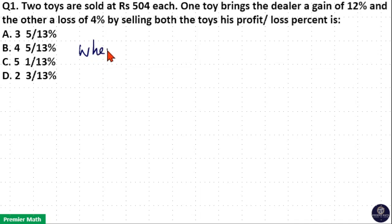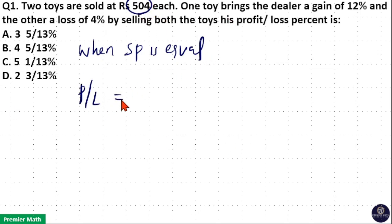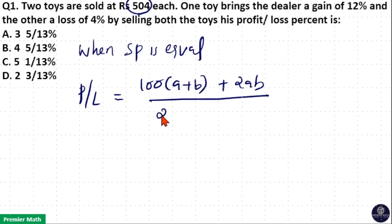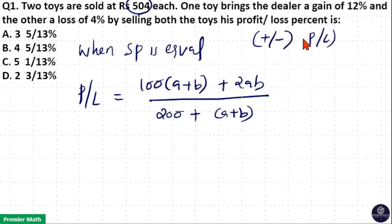This question can also be solved using the formula method. When the selling price is equal for two items, profit or loss percent = [100(a + b) + 2ab] / (200 + a + b), where a and b are profit or loss values. Use a plus sign for profit and a negative sign for loss.